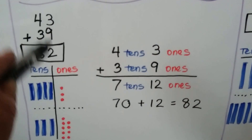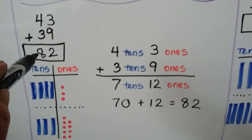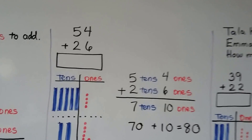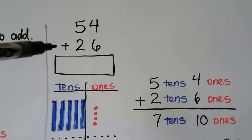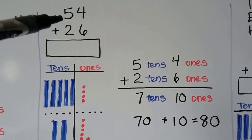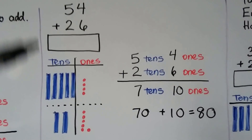We keep the ones in the ones place and the tens in the tens place. Let's try it again. We have 54 plus 26. We have five tens and four ones.